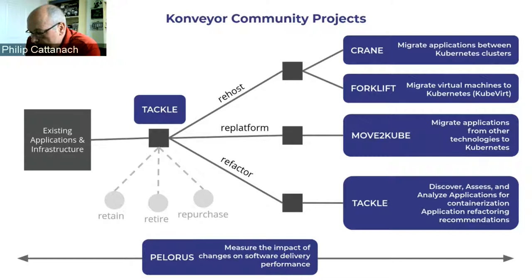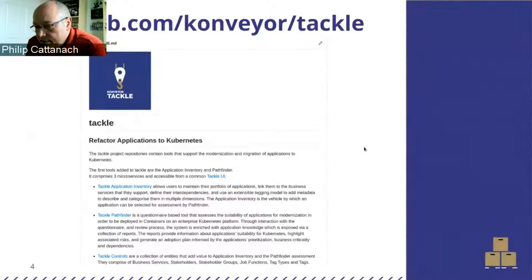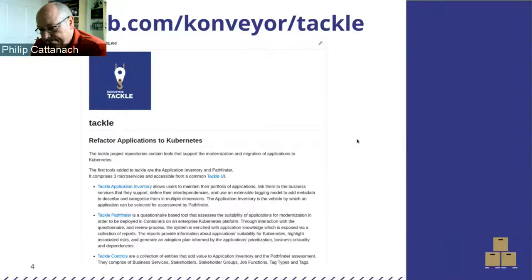We have Crane to migrate applications between Kubernetes clusters, Forklift to migrate VMs across to Kubernetes, and the Move to Kube project that allows you to migrate applications from technologies like Docker Swarm or Cloud Foundry onto Kubernetes. Tackle can also be used for refactoring via the Migration Toolkit for Applications, which is the downstream product for the upstream Windup project. Windup will be joining Tackle later this year. Pylorus sits across all of these tools and measures the impact of changes on your software delivery performance.